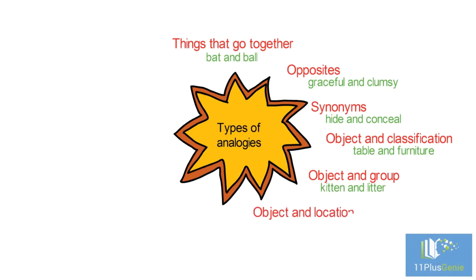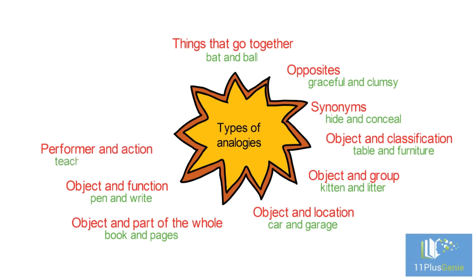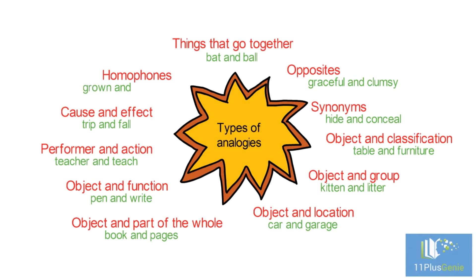Object and location, like car and garage. Object and part of the whole, like book and pages. Object and function, like pen and write. Performer and action, like teacher and teach. Cause and effect, like trip and fall. Homophones, like groan and grown.